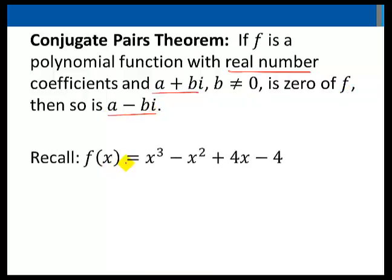Recall the polynomial f of x equals x cubed minus x squared plus 4x minus 4. We found the zeros to be 1, negative 2i, and 2i.